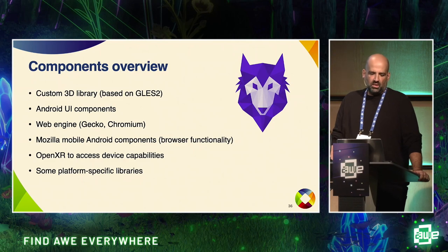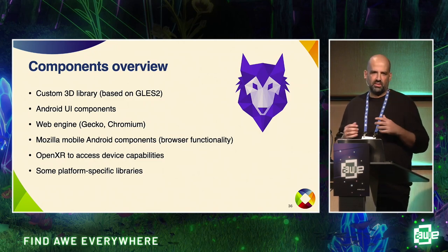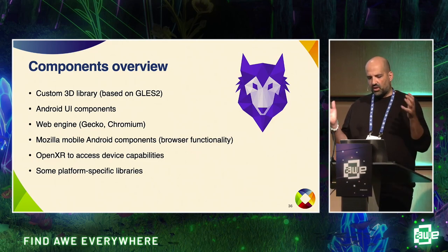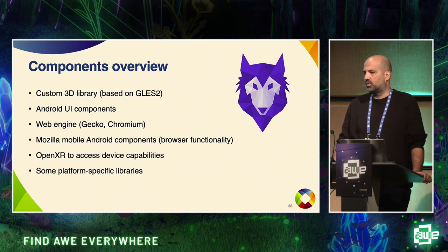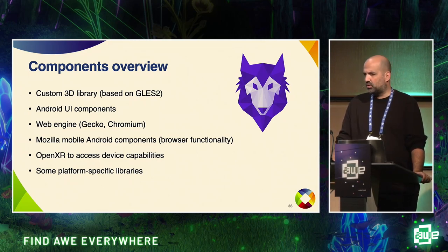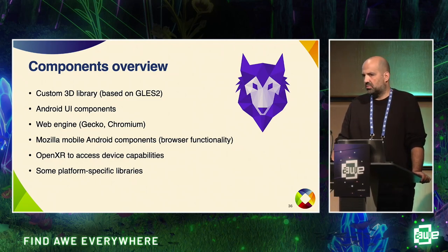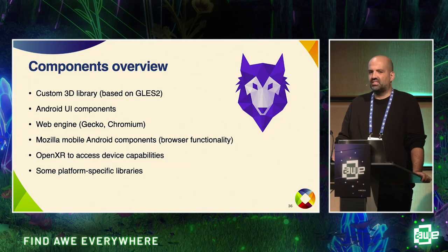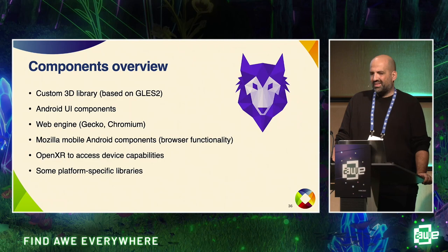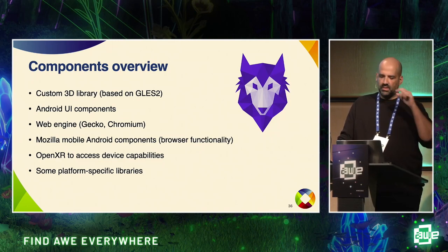In terms of architecture, WolvIK has six different pieces that work together. There's a custom 3D library that runs the 360 environment and gives us a lot of flexibility with the UI. In this environment we paint mostly Android UI components for now. Underlying this there's a web engine — originally Gecko, and now we are also working on Chromium. We reuse a lot of building blocks from Mozilla for things like bookmarks management or deciding which search engine to use, to avoid reinventing the wheel.